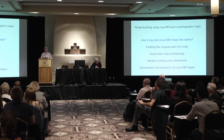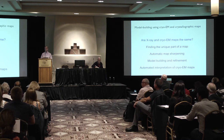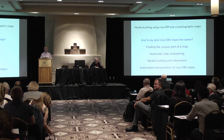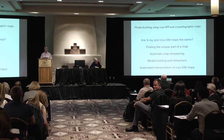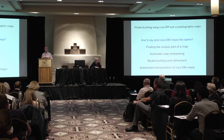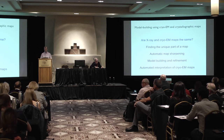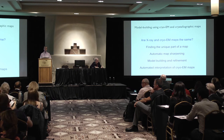Here's what I'd like to talk about. First, I'd like to compare cryoEM and X-ray maps, because they have some very substantial similarities and also some very important differences which are not universally appreciated. Then I'll talk about how to interpret low-resolution maps focusing on cryoEM maps — finding the unique part of the map, changing the characteristics of the map with automatic map sharpening, model building and refinement, and where we are today in automated interpretation of cryoEM maps.